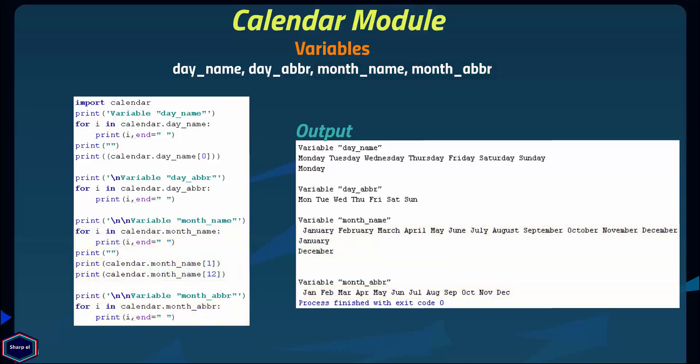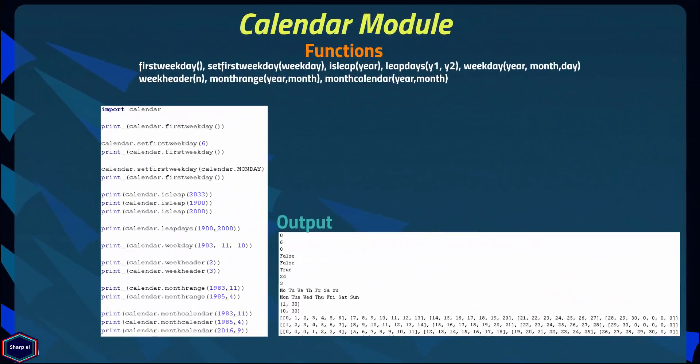Now let's look at the functions provided by the calendar module. The firstweekday() function returns an integer value between 0 and 6 which represents the first day of the week. By default it is set to 0, which is Monday. With the setfirstweekday() function you can change the default weekday. It takes an integer value between 0 and 6, and you can also use the constants defined in the calendar module to change the default weekday.